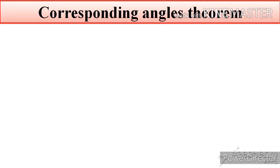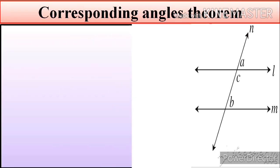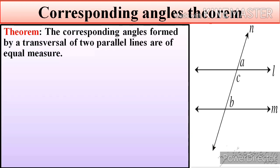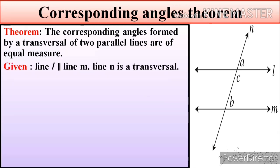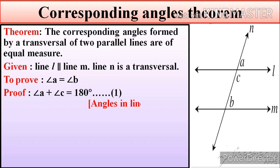Now we are going to see the second theorem: the Corresponding Angles Theorem. The theorem states that the corresponding angles formed by a transversal of two parallel lines are of equal measure. In the figure, the given information is that line L is parallel to line M, and line N is the transversal.